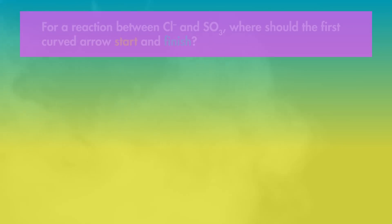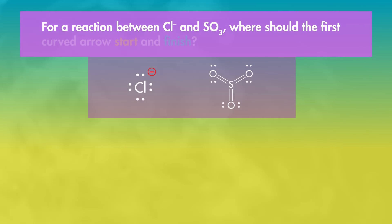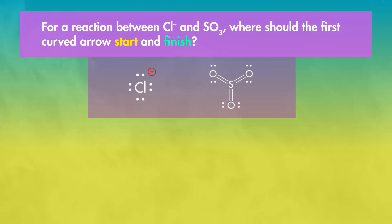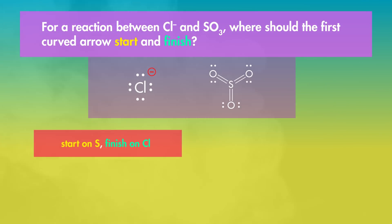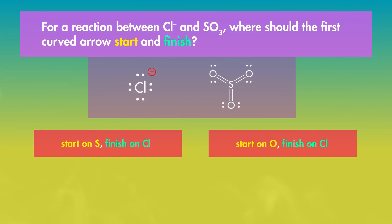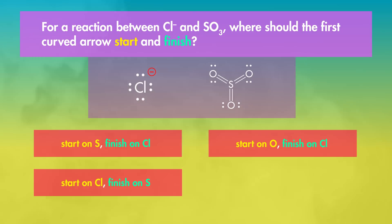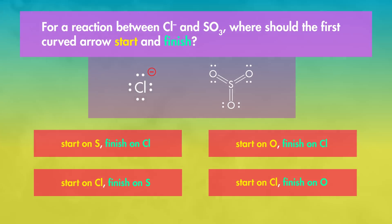One last reaction, but this time I'm not going to show you the products. For a reaction between chloride and sulfur trioxide, where should the first arrow start and finish? Options: start on the sulfur, finish on the chlorine; start on an oxygen, finish on the chlorine; start on the chlorine, finish on the sulfur; or start on the chlorine, finish on an oxygen.